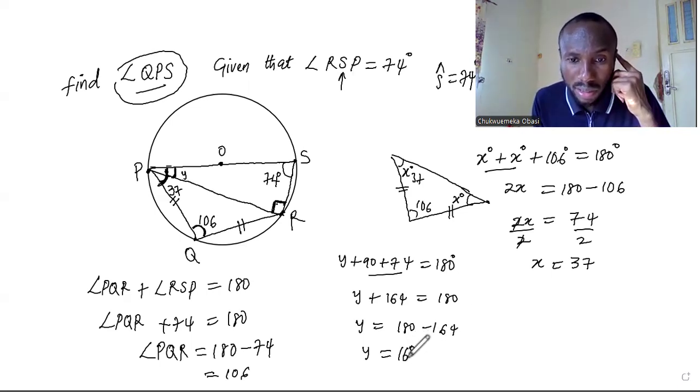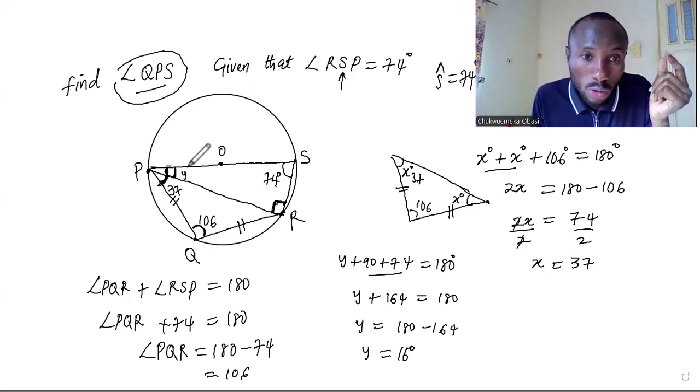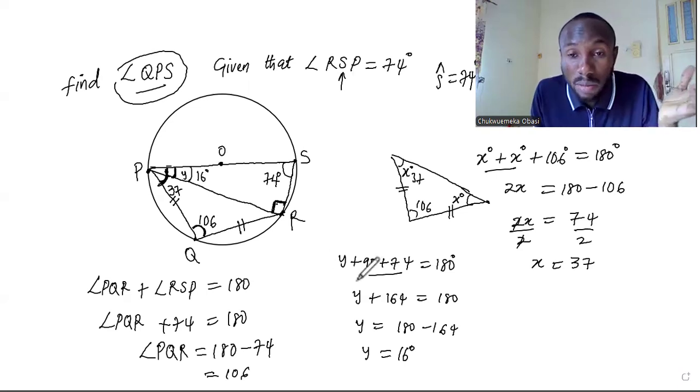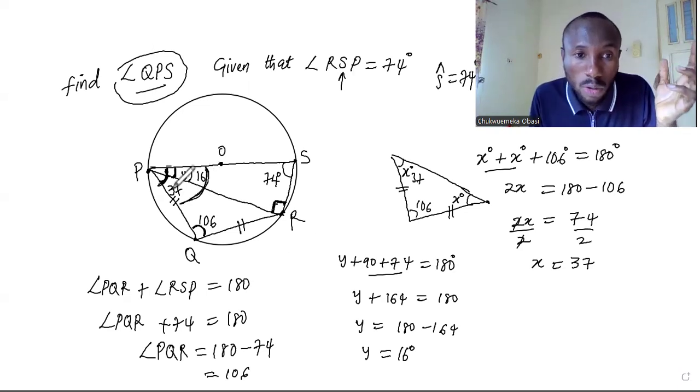But is that the final result? Of course no. We want to find angle QPS, so once we find the whole of this angle here, the whole of this angle, that's what we are looking for. So what do you think we are going to do? We are going to sum the 37 and 16.